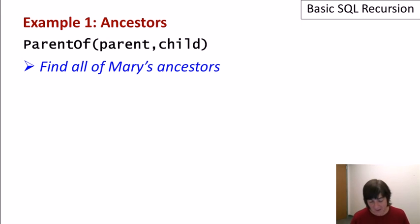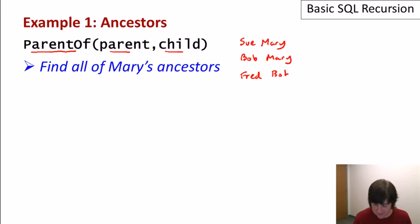In each of my examples I'm going to give a relational schema and then a query we'd like to write over that schema, but we'll see that we can't. The first is a simple ancestors computation. For example, we might have that Sue is a parent of Mary and maybe Bob is also a parent of Mary and maybe Fred is a parent of Bob and Jane is also a parent of Bob and so on. We're just listing the parent-child relationships in our relation called ParentOf, and then our goal is to use that relation to compute, say, all of Mary's ancestors.